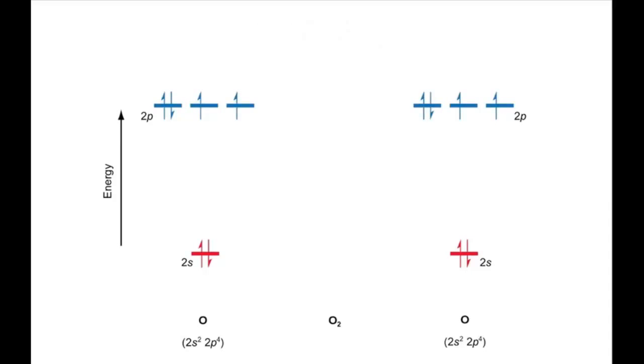The higher up the screen an orbital is, the higher in energy it is. The 2s orbitals interact together to form a sigma g bonding orbital and a sigma u antibonding orbital. The bonding orbital is lower in energy than the contributing atomic orbitals and the antibonding orbital is higher in energy.